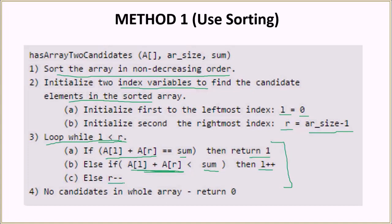Why do we do this? Because if the sum of the two elements is not equal to the target, it will be either greater or less than it. To bring the sum closer to the target, we need to either increase or decrease one of the values. If the sum needs to increase we do L++; otherwise we do R--. We exploit the fact that the array is sorted, which we ensured in the first step.